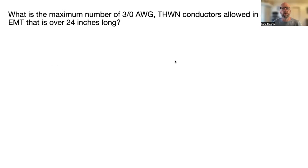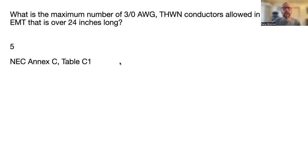Next question: what is the minimum size of three THWN conductors allowed in a two-inch EMT that is over 24 inches long? Since it's over 24 inches long, we cannot load it up to 60% fill. Chapter 9, Table 1 or Table 2 tells us that if it's less than 24 inches we can go up to 60%, but over 24 inches means 40% fill. The answer is size 5 — refer to Annex C, Table C1, looking up EMT.